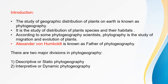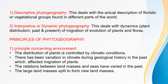There are two major divisions in phytogeography. The first is descriptive or static phytogeography, and the second is interpretive or dynamic phytogeography. Descriptive phytogeography deals with the actual description of floristic or vegetational groups found in different parts of the world.